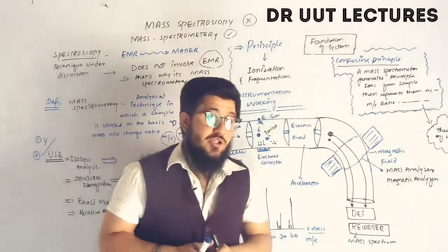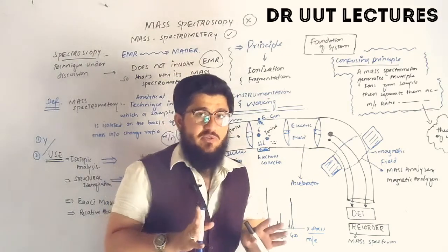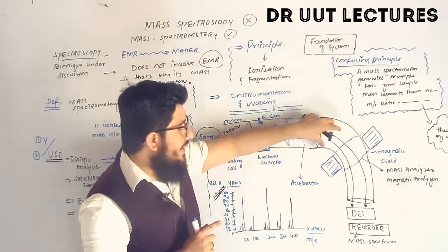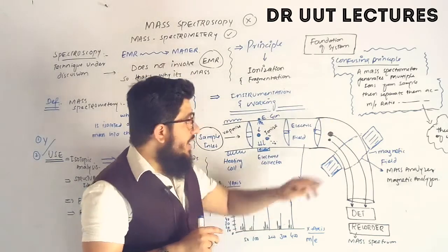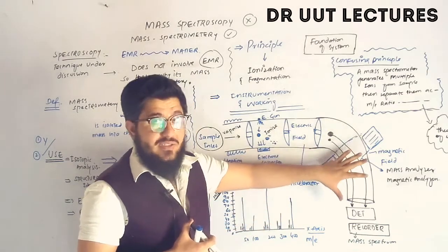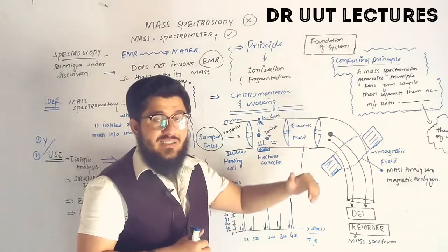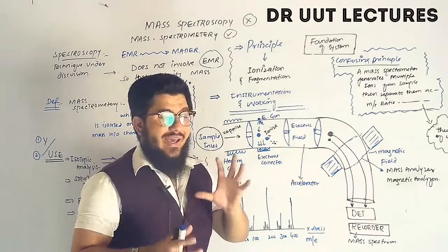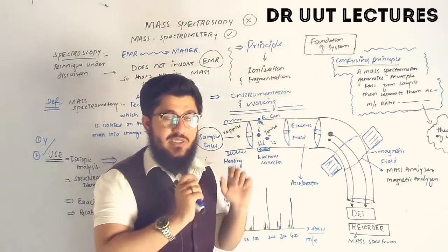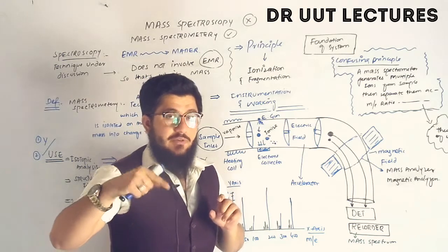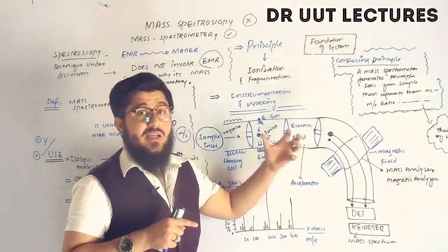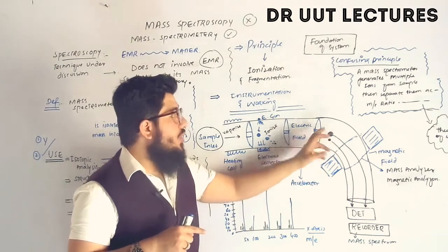The ions then enter the mass analyzer chamber, which contains a magnetic analyzer. This magnetic analyzer separates the ions based on mass-to-charge ratio. Ions of lighter mass are deflected more, while ions of heavier mass are deflected less — similar to kicking a tennis ball versus a football: the lighter tennis ball travels much farther because the same force deflects lighter objects more.